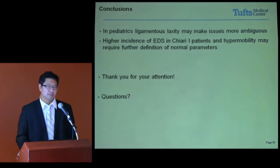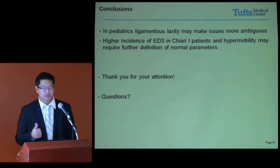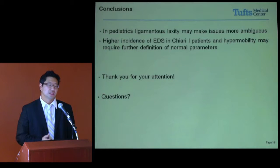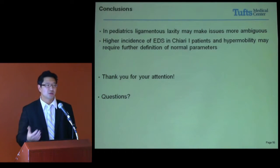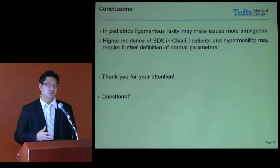The questions that persist are: how do we define pediatric ligamentous laxity and how do we incorporate it into our diagnosis? Furthermore, when patients have EDS and Chiari malformations, what might be an acceptable range of normal that doesn't require treatment? Thank you very much for your attention.